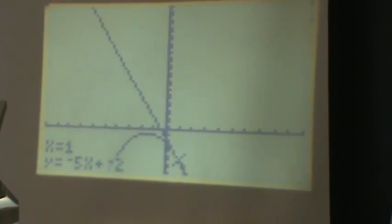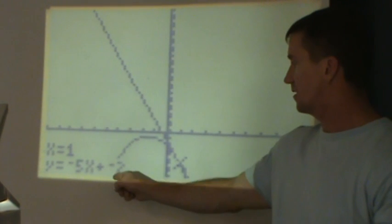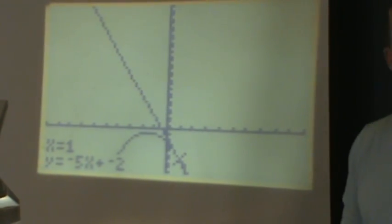And there's the tangent line drawn to the curve, and we check our answer, and there it is, y equal to negative 5x minus 2.